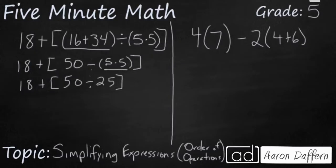So really, I'm looking at 18 plus 50 divided by 25. Well, that's simply going to be 2. And I don't really need the bracket anymore. 18 plus 2, that makes 20.